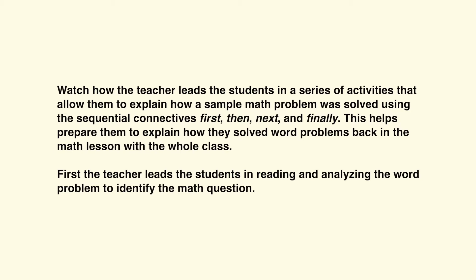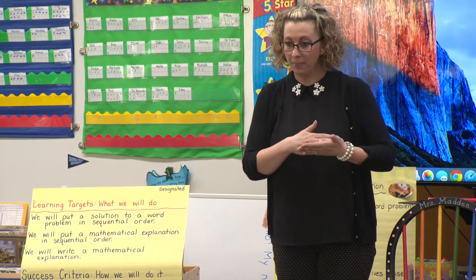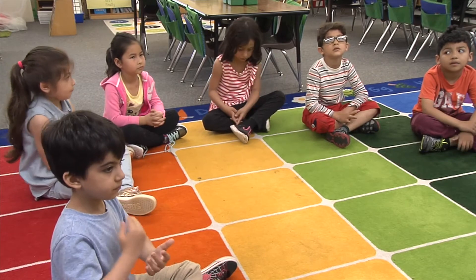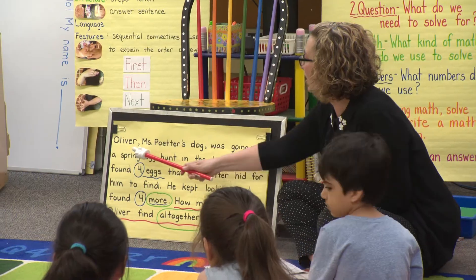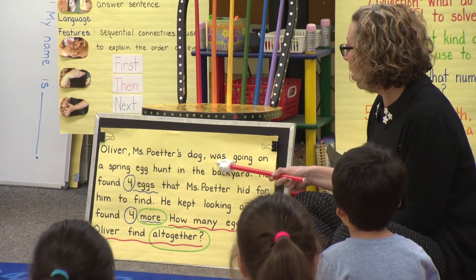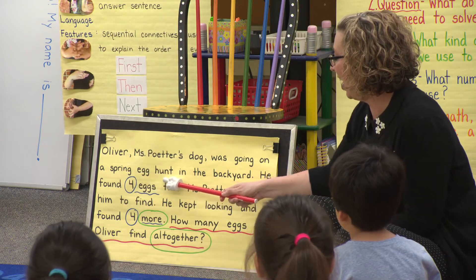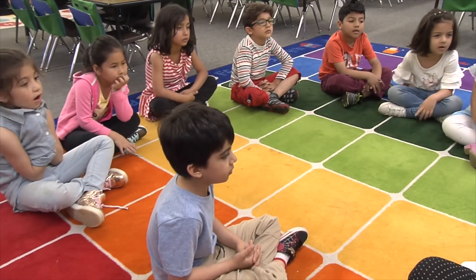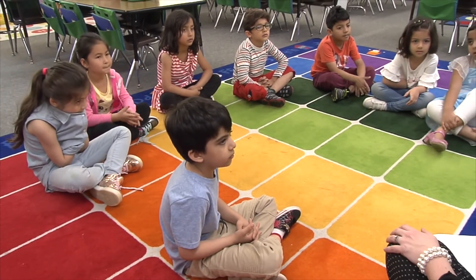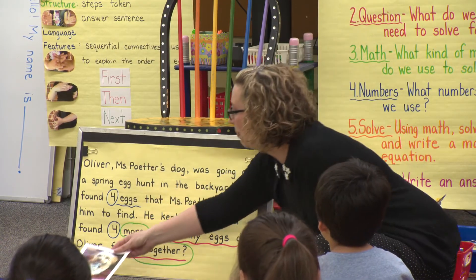First, the teacher leads the students in reading and analyzing the word problem to identify the math question. Teacher: Today we're going to look back at a word problem that we've already solved. Let's read. Oliver, Ms. Potter's dog, was going on a spring egg hunt in the backyard. Do you remember this problem? This is Oliver — this is who our word problem was about.